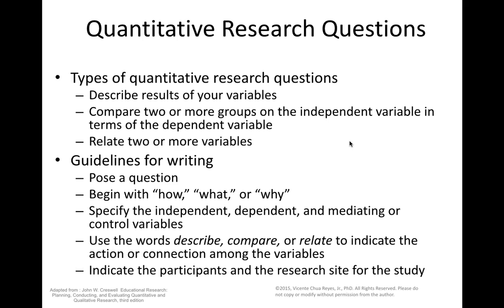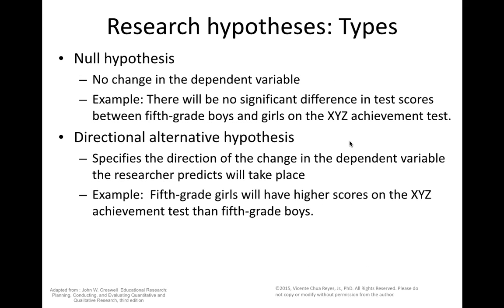Quantitative research questions describe results of variables, compare two or more groups on an independent variable in terms of the dependent variable — for example, looking at gender and age as independent variables in relation to student achievement — and relate two or more variables. Guidelines: pose a question beginning with how, what, or why; specify independent, dependent, and mediating or control variables; use words like describe, compare, relate; and indicate participants and research site.